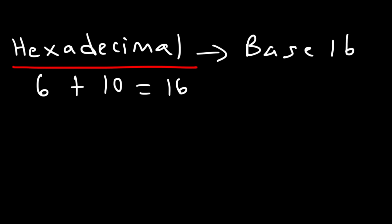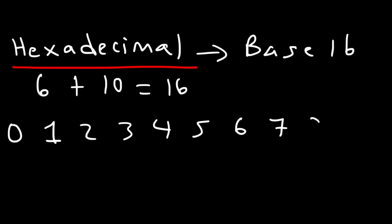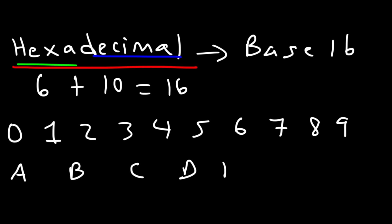The numbers in hexadecimal are zero, one, two, three, four, five, six, seven, eight, nine — all ten numbers from the decimal system — but we also have six letters: A, B, C, D, E, and F.